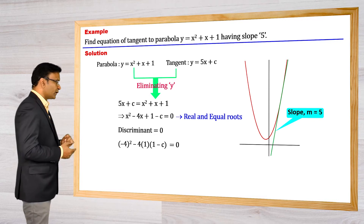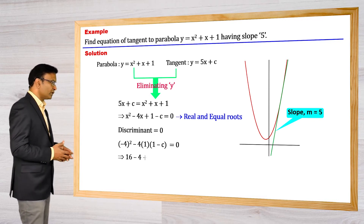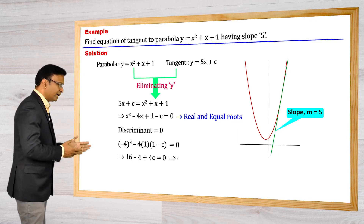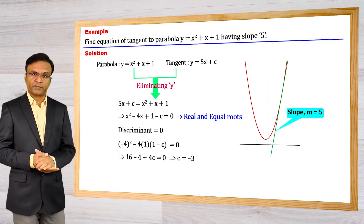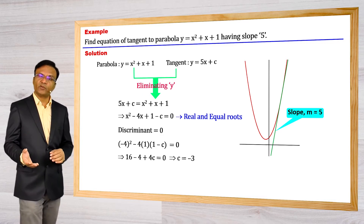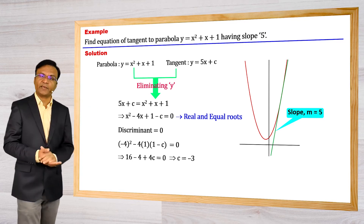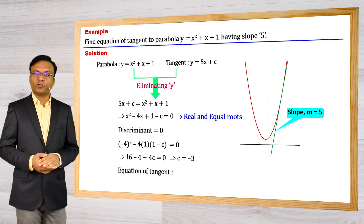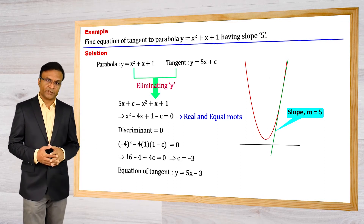We have this value of discriminant which is equal to 0. From this we get 16 minus 4 plus 4c is equal to 0, and from this we get the value of c is equal to minus 3. Putting this value of c in the equation y is equal to 5x plus c, we get the equation of tangent as y is equal to 5x minus 3.